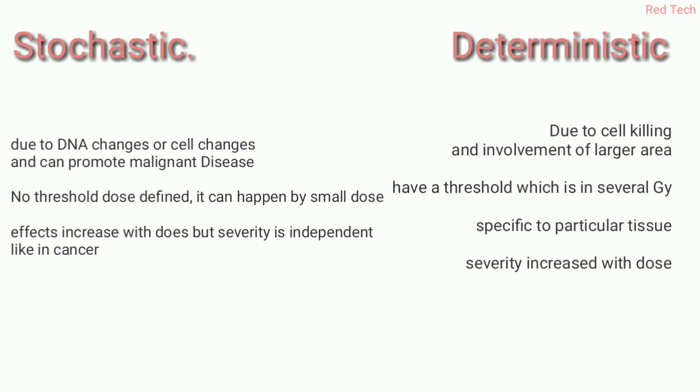In stochastic effects there is no threshold defined — it can happen by a small dose as well. In deterministic effects, there is a threshold limit measured in several grays. Workers have a dose limit set by ICRP and other international forums — around 20 grays or several grays are determined. If workers are exposed below that limit, they are on the safe side; if they cross that limit, they come under the deterministic effect.